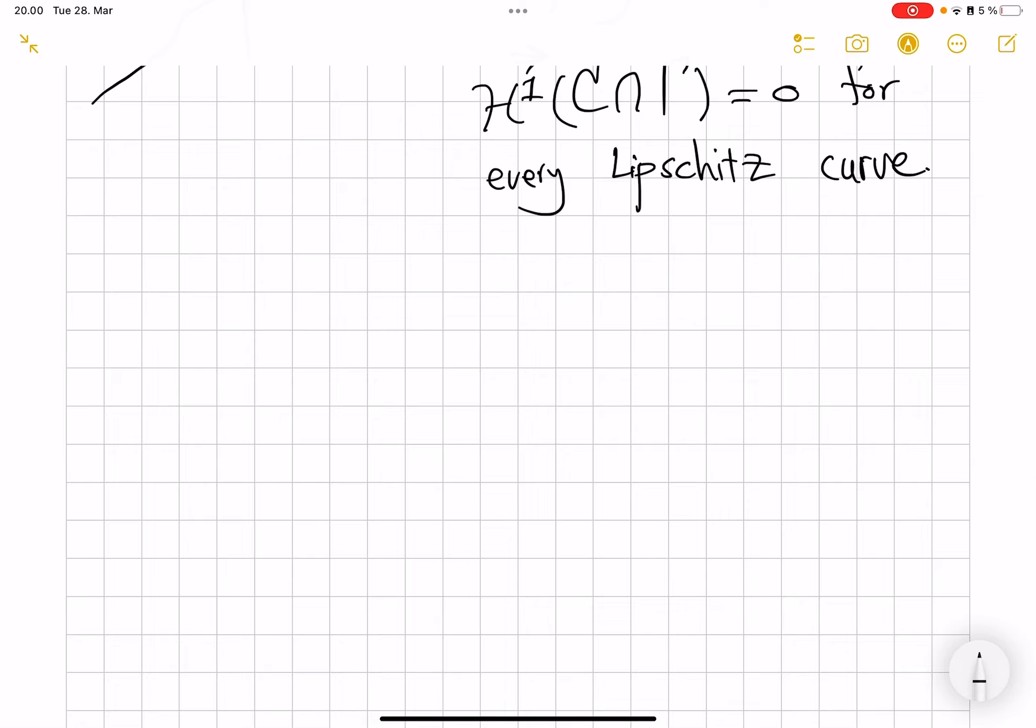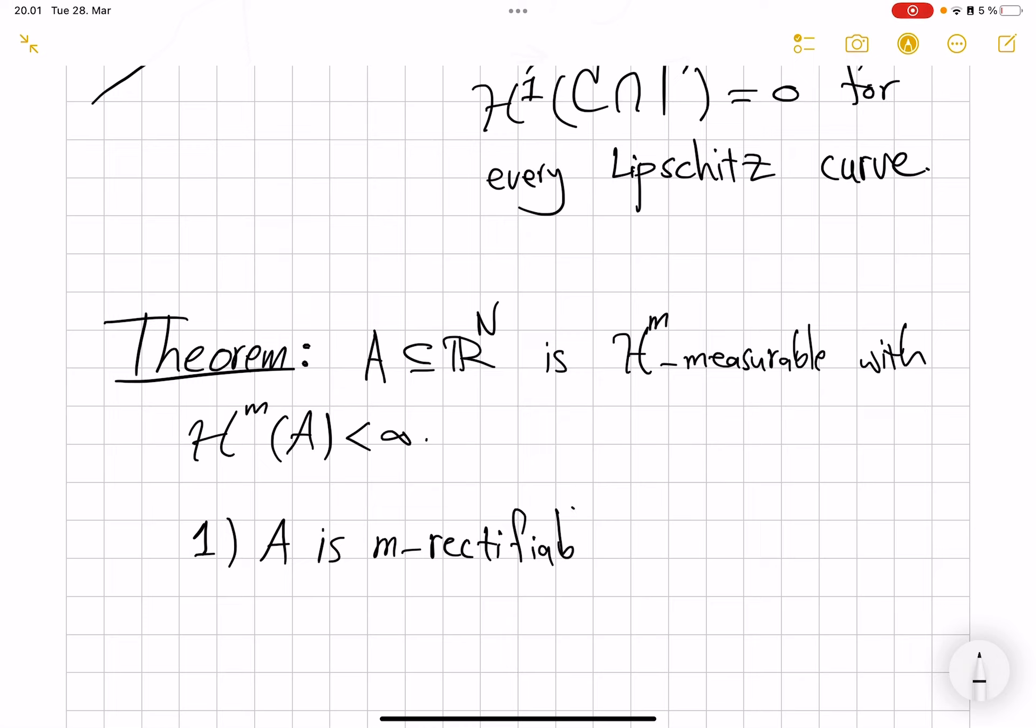So what is our amazing theorem due to Besicovitch and Federer? That theorem gives us if-and-only-if conditions on rectifiability or pure unrectifiability. So let A sitting inside R^N be H^m measurable with finite H^m measure. We've seen this condition in many theorems and I have explained why this is an essentially necessary condition. The first part identifies rectifiable sets. So A is m-rectifiable if and only if...